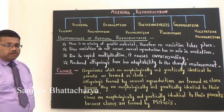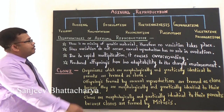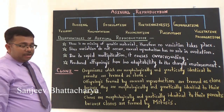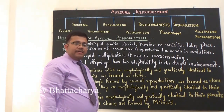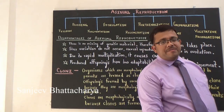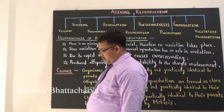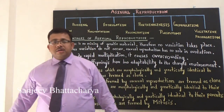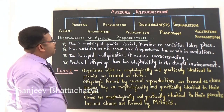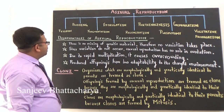Now we will know about the types of asexual reproduction. In your textbook there are 5 types of asexual reproduction, but more types have been added. Let us see how many types of asexual reproduction there are.